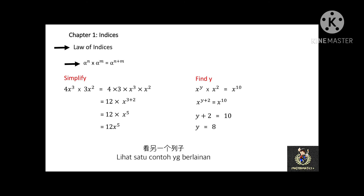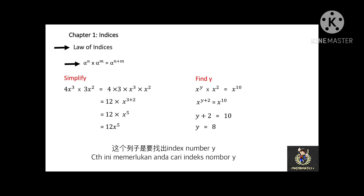Next example: x to the power of y times x to the power of 2 equals x to the power of 10. In this case, you have to find the index number y. Using the law of indices, x to the power of y plus 2 equals x to the power of 10. Therefore y plus 2 equals 10, and y equals 8.